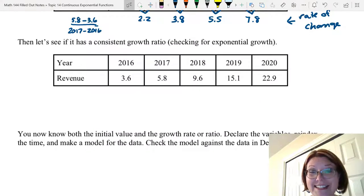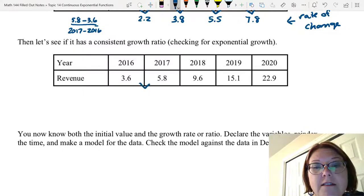Instead, let's see if this data set has a consistent growth ratio. Now we're checking for exponential growth. It is the exact same data set, and so we already know the data is evenly spaced. When we look for a consistent growth ratio, we take each successive pair of data points and find the ratio of the points. In other words, we're trying to find by what ratio the data grew or fell by. So for this first set, I would do 5.8 divided by 3.6, which comes out to be 1.611.